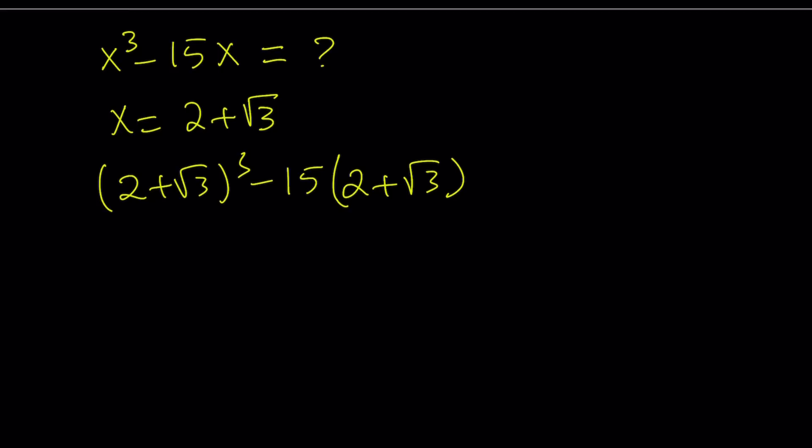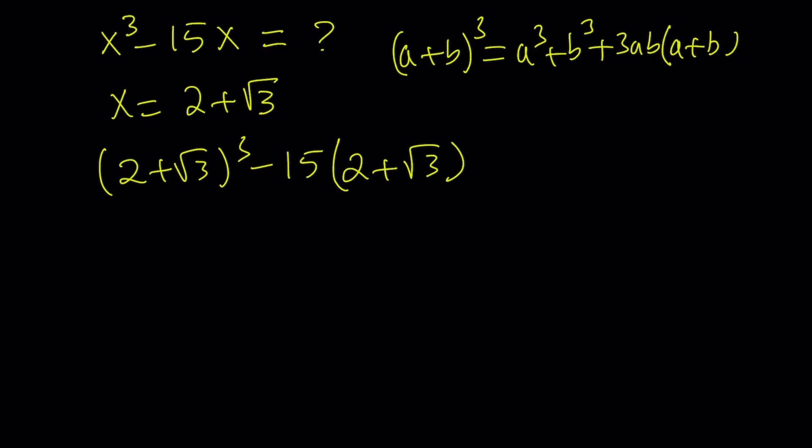How do you cube a plus b? There's many ways to do it. The binomial theorem gives us something. And I like this version of the binomial theorem. I want to write it as a cubed plus b cubed plus 3ab multiplied by a plus b. This kind of keeps it a little bit more organized. And to me, it seems a little easier and more convenient. Anyways, 2 cubed is 8. Root 3 cubed is 3 root 3. Plus 3ab is going to be 6 root 3 and then multiply it by 2 plus root 3. And we can just distribute that. Minus 30 minus 15 root 3.